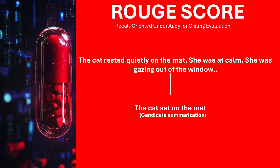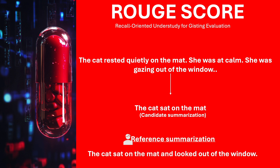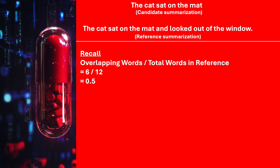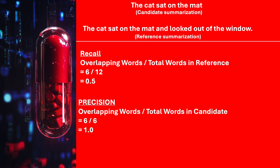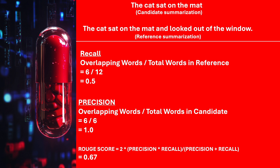Now in order to check the quality of summarization, we need a reference summarization by human experts. And let's say the reference summarization is 'the cat sat on the mat and looked out of the window.' We are ready to calculate the ROUGE score, which has got multiple parts. The first is the recall, which is matching words by total words in the reference summary — here it is 6 by 12, which is 0.5. And the next is the precision, which is matching words by total words in the candidate summary — here it is 6 by 6, which is 1. So the ROUGE score is given by the formula shown on the screen, which gives us a score of 0.67.